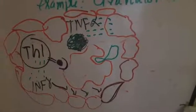As can be seen here, this is the granuloma. We have T helper 1, we have interferon gamma, we have the bacteria, we have macrophages, we have giant cells, and we have the epithelioid cells.